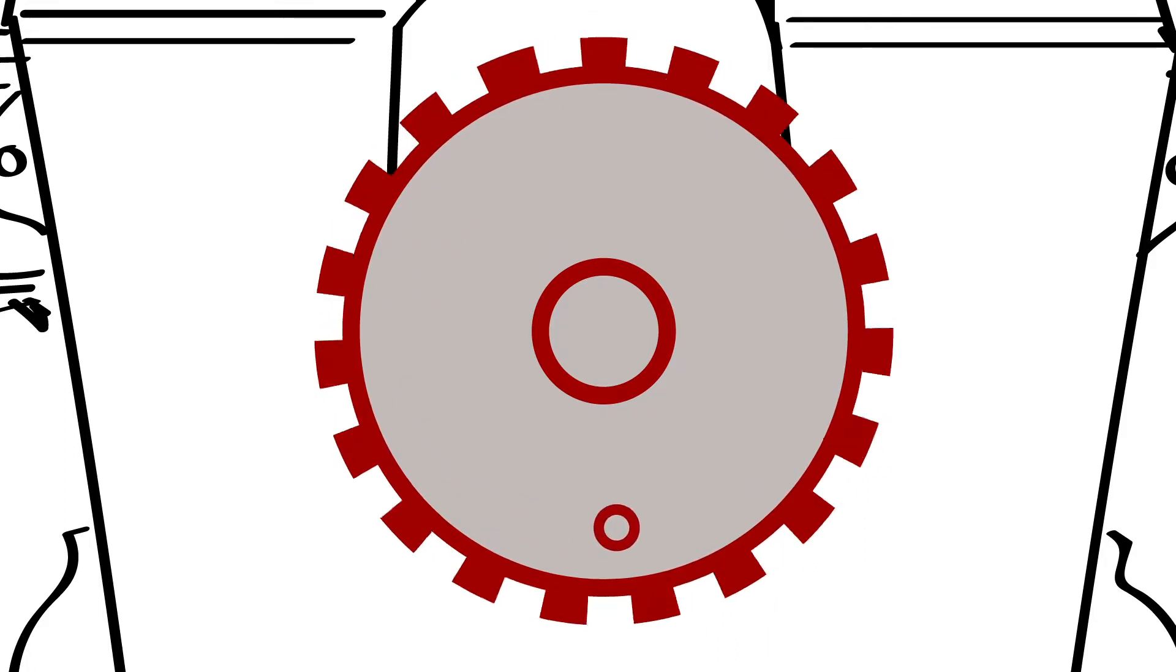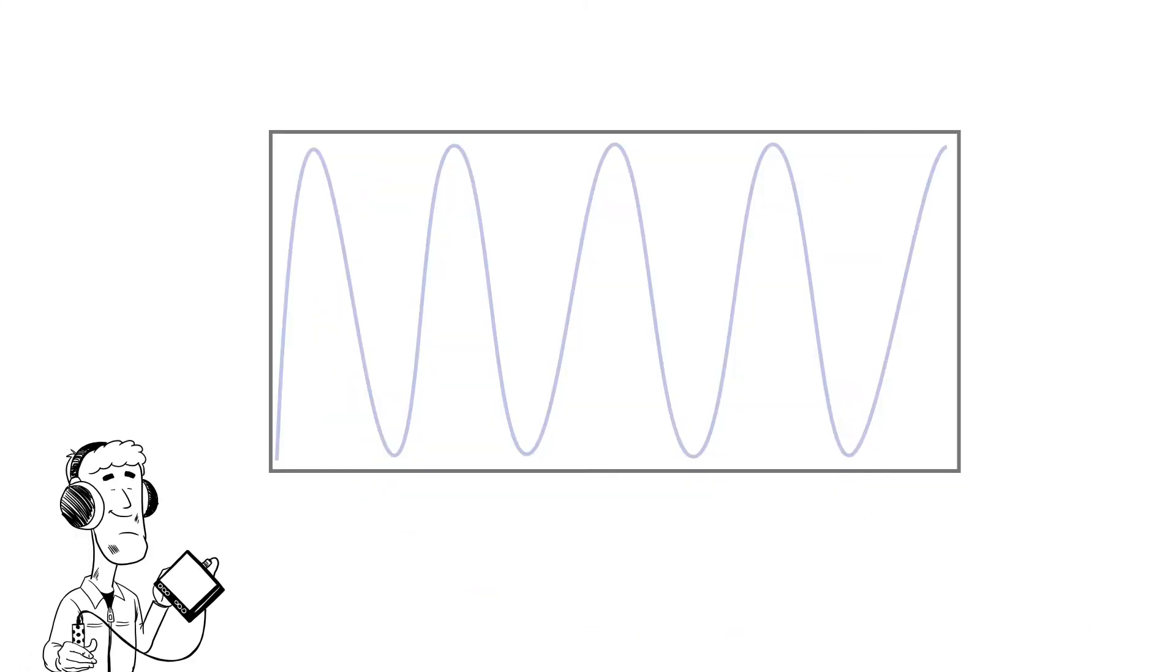Since any performance analyzer can only measure the pressure signal over time, but we want to see the pressure signal over the exact crankshaft angle, the correct speed of the shaft is important. In a brand new or perfectly adjusted engine, this would be a sinus curve which the software can calculate.